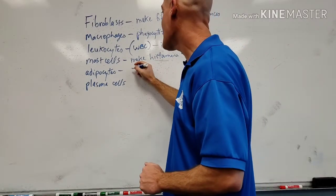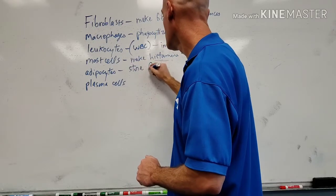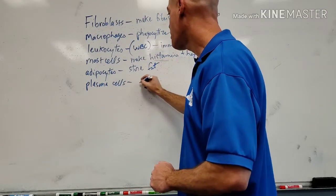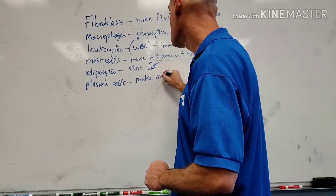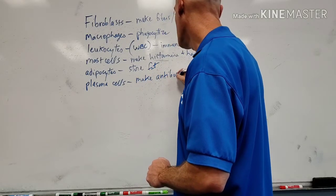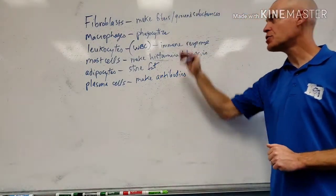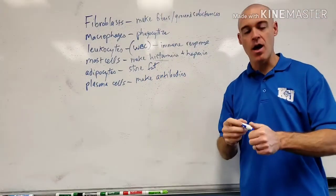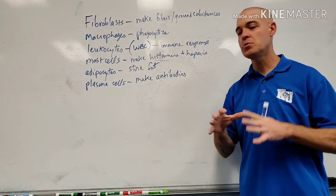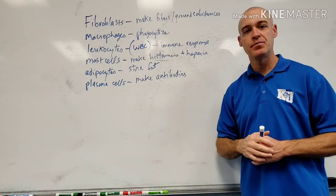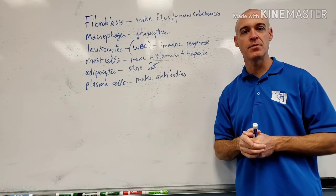Adipocytes are fat cells, so their job is to store fat. And plasma cells are going to make something called antibodies. So those are the six cells of fibrous connective tissue. We're going to do some short videos, so watch out for more. Until next time, good luck and stay safe.